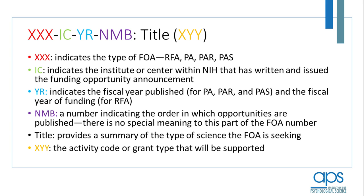The three-digit number that follows the year has no real meaning — it is just a coding system for the institute to track the number of FOAs they issue in a given year. Following that, there is typically a lengthy title designed to give the reader an indication about the topic of the FOA and the type of science being solicited. Then the activity code, which always appears in parentheses at the end, indicates the grant mechanism that this FOA will seek and tells you the type of science being supported.